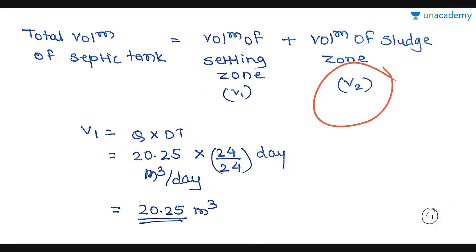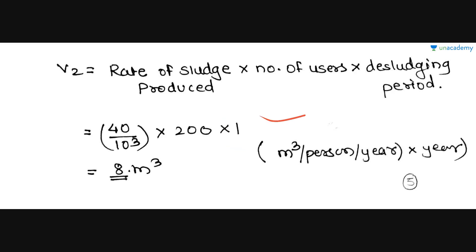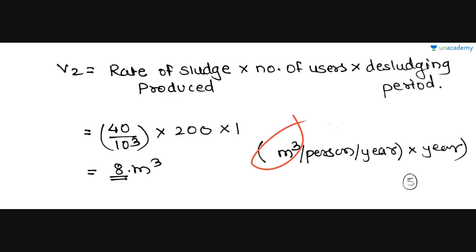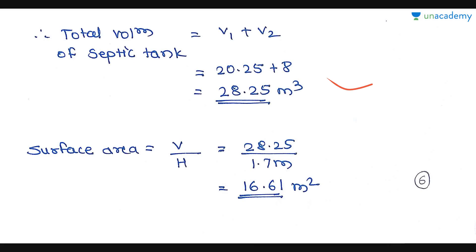Now let's calculate V2, the volume of the sludge zone. V2 = rate of sludge produced × number of users × desludging period. The desludging period is 1 year, the number of users is 200, and the rate of sludge produced is 40 litres/person/year = 40/1000 m³/person/year. So V2 = (40/1000) × 200 × 1 = 8 m³. Total volume of septic tank = V1 + V2 = 20.25 + 8 = 28.25 m³.